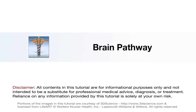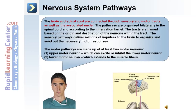We'll now move on to discuss brain pathways. The central nervous system and the peripheral nervous system are connected through sensory and motor pathways. The brain and spinal cord are connected through sensory and motor tracts as well as their associated nuclei. The pathways are organized bilaterally in the spinal cord, and according to the innervation target, these tracts are named based on the origin and destination of the neurons within the tract.